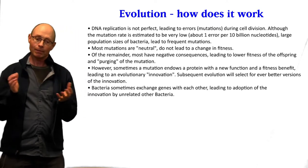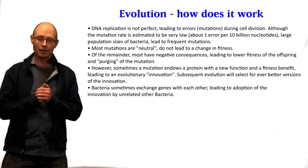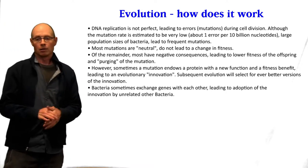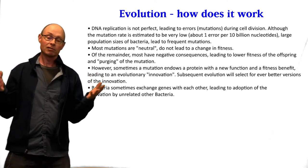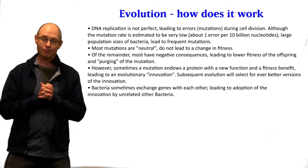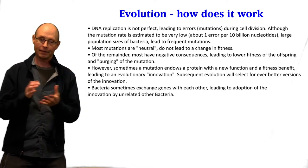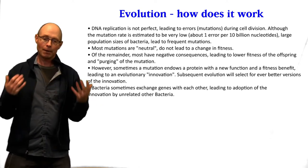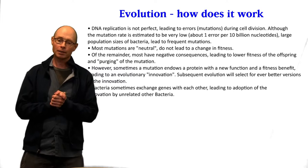So how does evolution work? When organisms replicate, DNA replication is not perfect and leads to errors. These are quite rare, but especially for bacteria — because there are so many of them and they replicate all the time — mutations are actually frequent. Most mutations do nothing and don't lead to a change in anything. When a mutation does have a consequence, it's usually bad and those organisms die off. Sometimes something good happens — this is very rare — and the organism actually gets a benefit, leading to innovation. Subsequent evolution will then select for even better versions of that innovation.